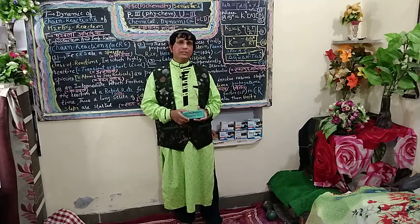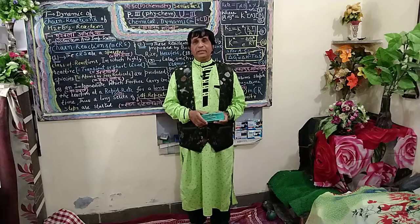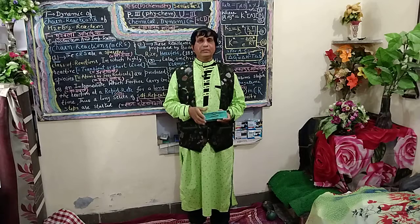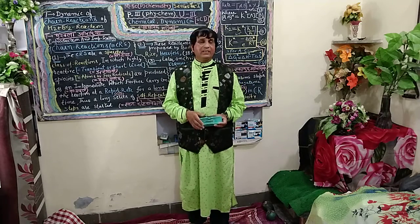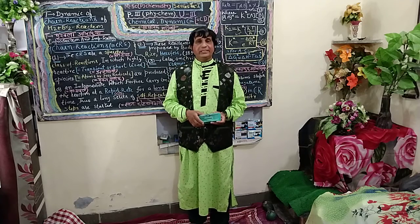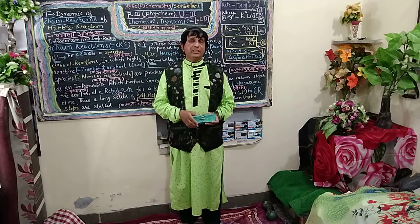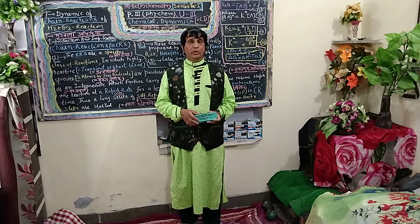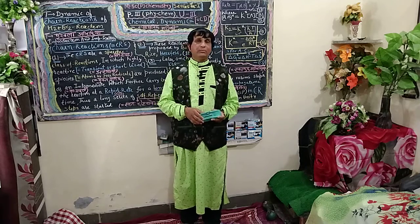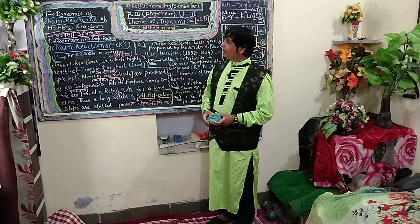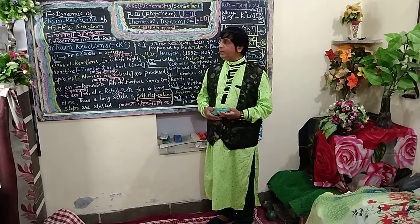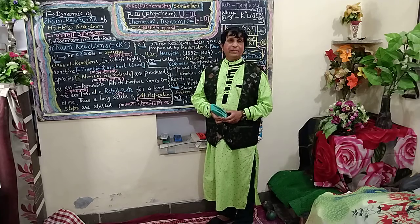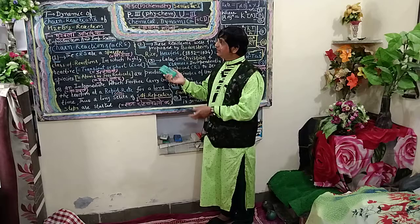Before proceeding with today's lecture, I would like to teach you about the basic important points of two theories: collision theory and activated complex theory, which are directly related to today's lecture on the chain reaction of hydrogen and bromine. I will draw your attention to the fundamental equation of activated complex theory. Activated complex theory is also known as transition state theory or absolute reaction rate theory, firstly developed by Polanyi, Evans, and Eyring in 1935.